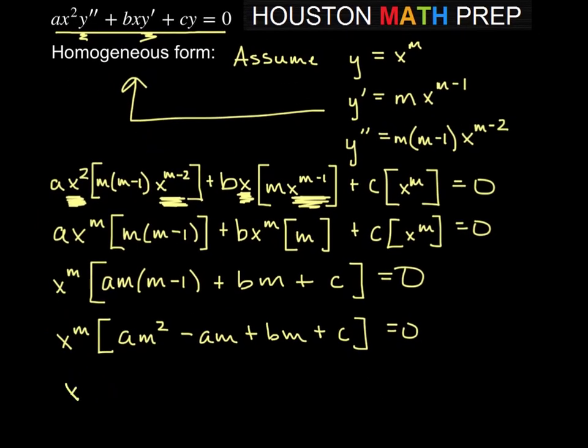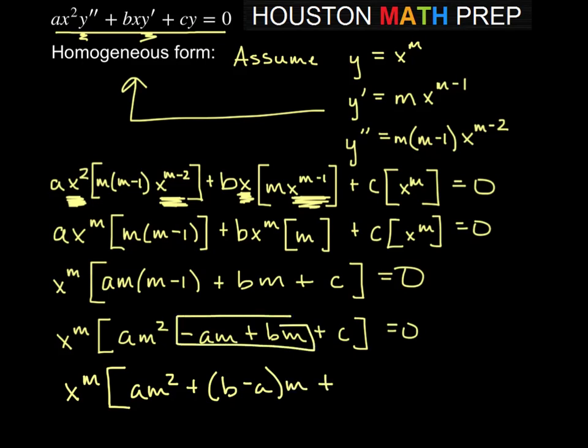If we combine the like terms, the equation we end up with is x to the m times the quantity am squared plus, and the coefficient for m is b minus a if we combine these two terms, times m, plus c, equal to zero. We will get that x to the m is a solution whenever this expression here in the brackets is equal to zero, and that's what we'll focus on when we're solving this form.